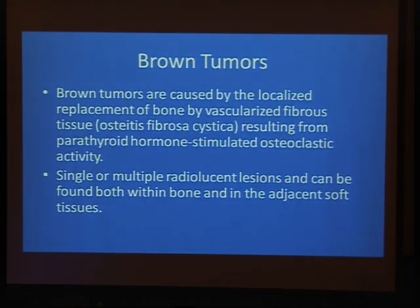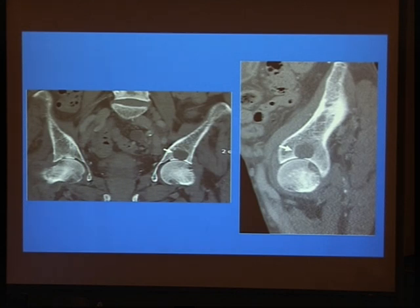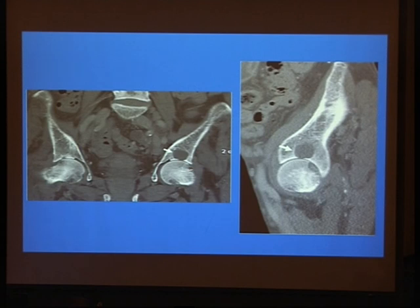What about brown tumors? A brown tumor is a replacement of normal bone marrow with fibrous tissue resulting from parathyroidism — non-stimulated osteoblastic activity. It may be single or multiple lesions and can be found within bone and in adjacent soft tissue. As you can see here, this is fibrous tissue replacing bone marrow with some bone expansion and cortical destruction. The sagittal image shows the lytic expansile region with cortical destruction.